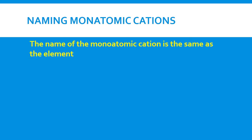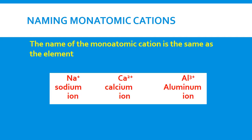When naming monatomic cations, the name is the same as the element — we simply add the word 'ion' to the end. So sodium with a charge of +1 is called the sodium ion, calcium with a charge of +2 is called the calcium ion, and aluminum with a charge of +3 is called the aluminum ion.